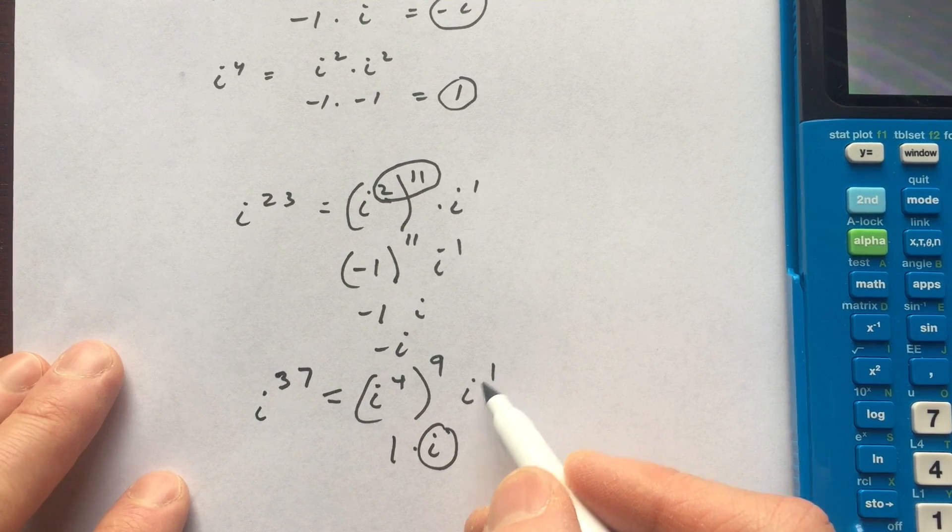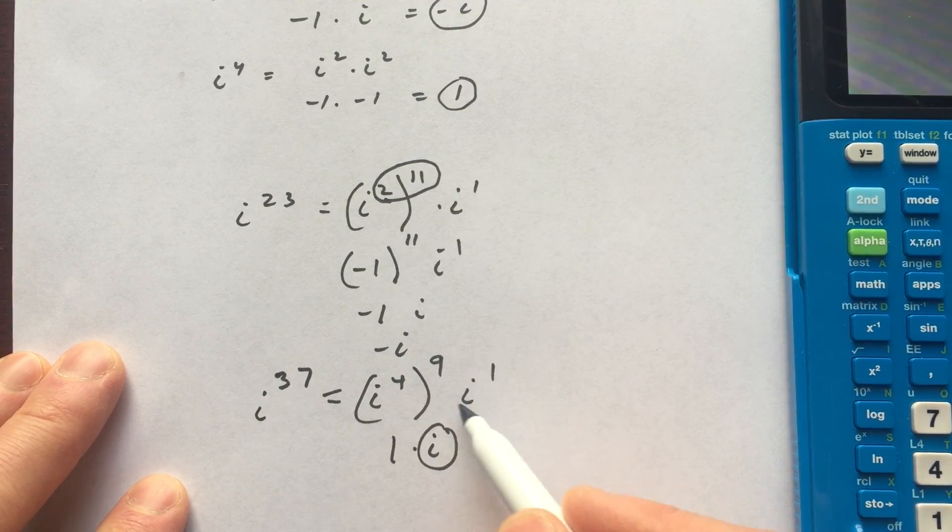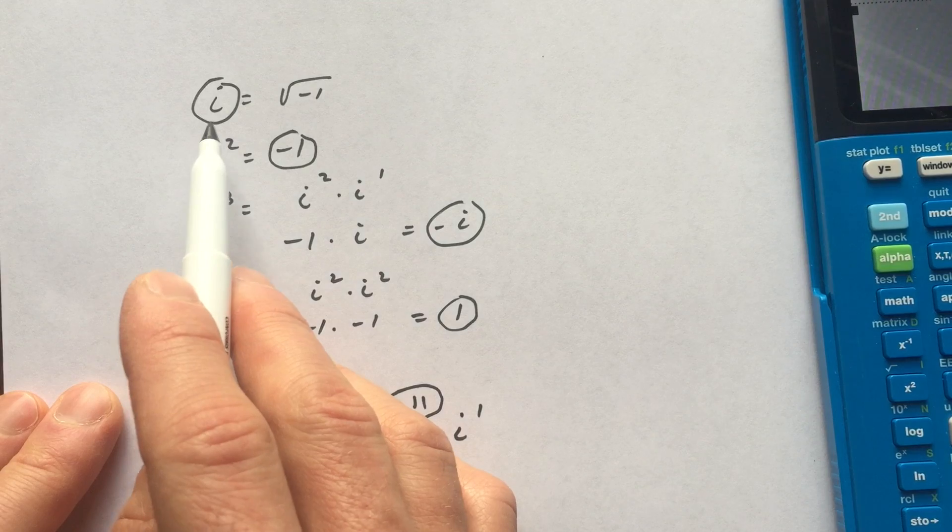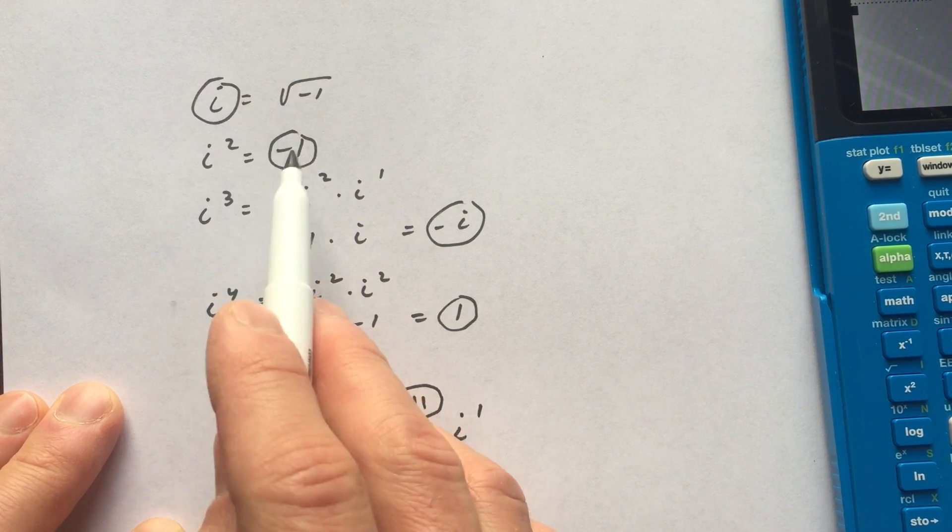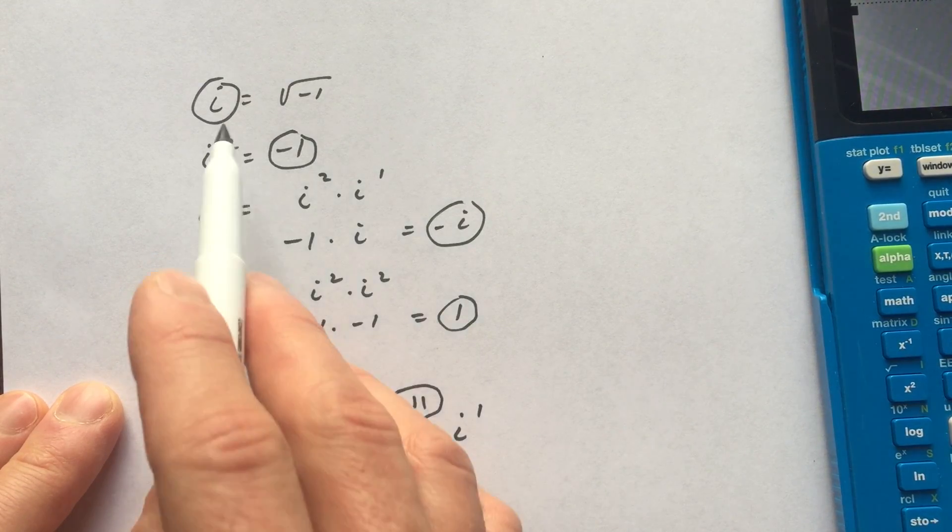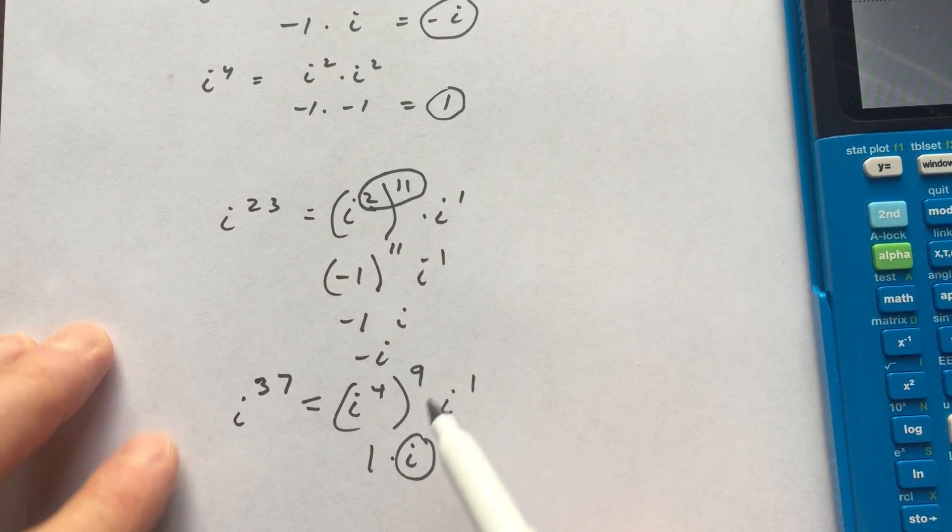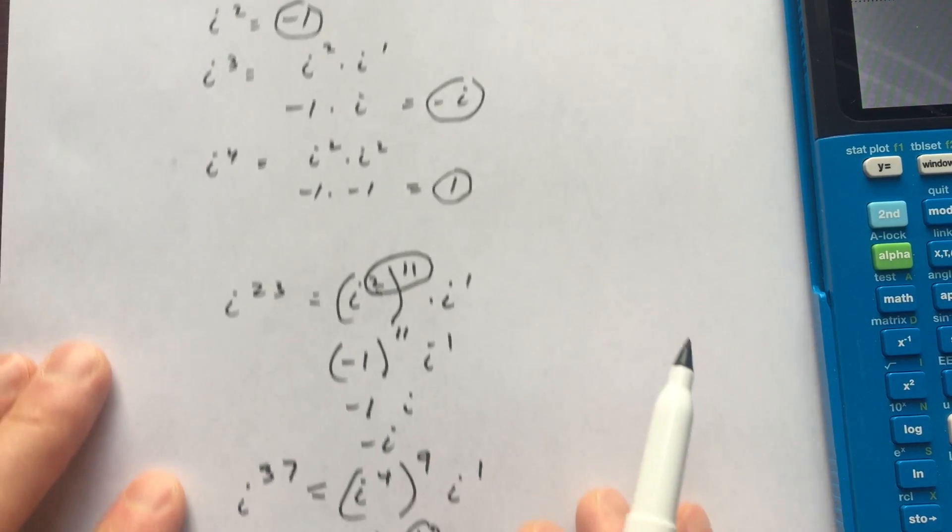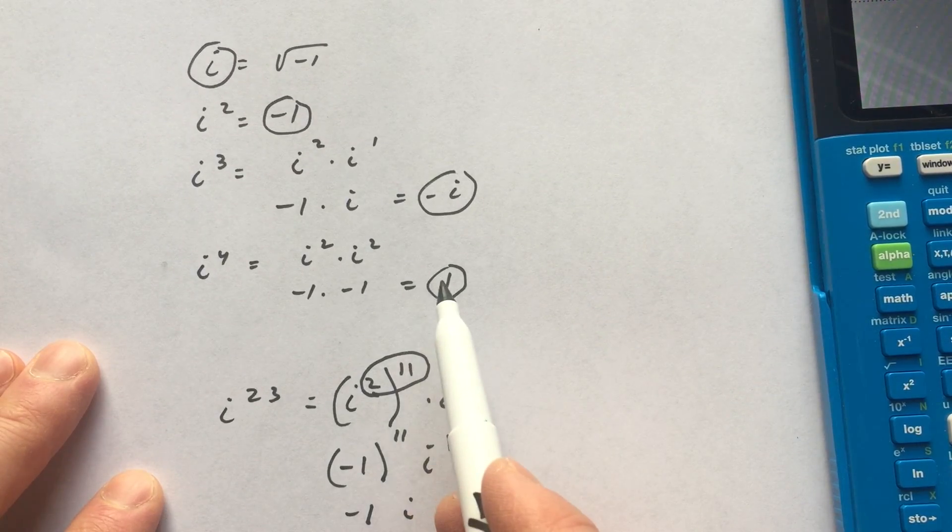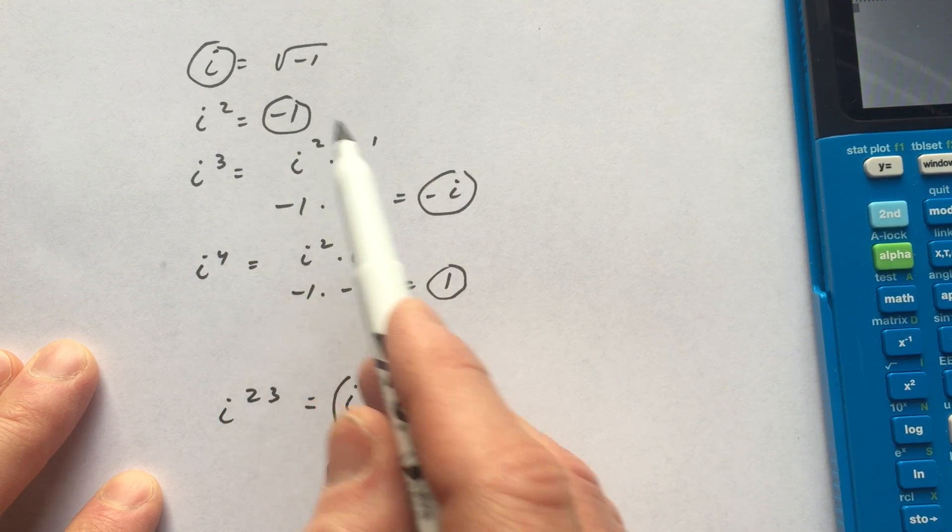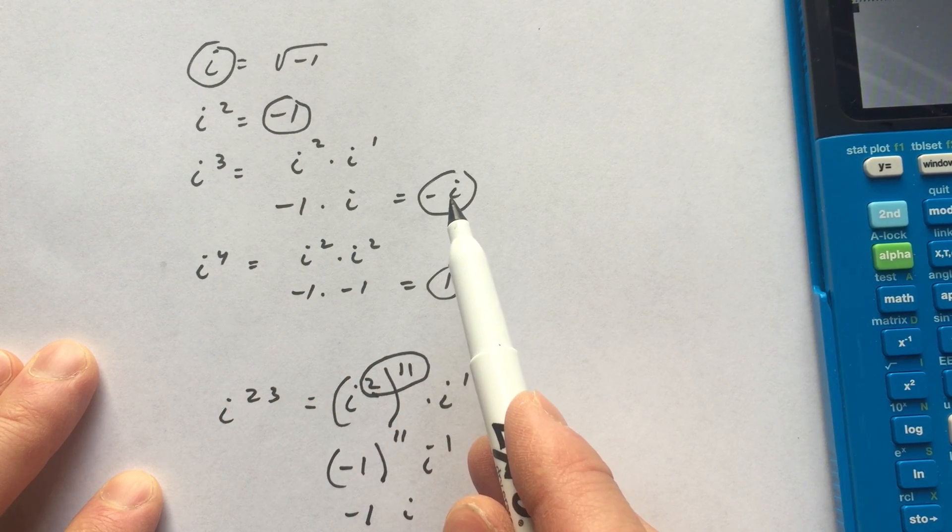Now, if this came out to i squared, then it would be negative 1. If the left over was i cubed, then it would be negative i. And then if there's nothing left over, it would just be 1. So what you can do is you can use these values and just cycle through. But what you do is you divide by 4 and then you look at the left over, however many i's are left over. If there are none left over, it's 1. If there's 1 left over, it's i. If there's 2 left over, it's negative 1. And if there's 3 left over remaining, then it's negative i.